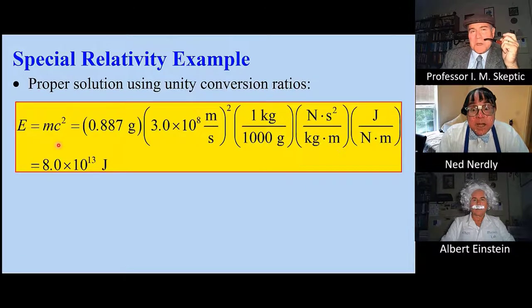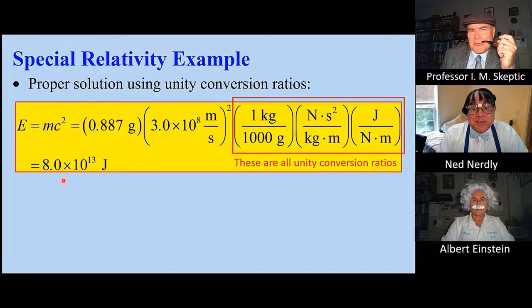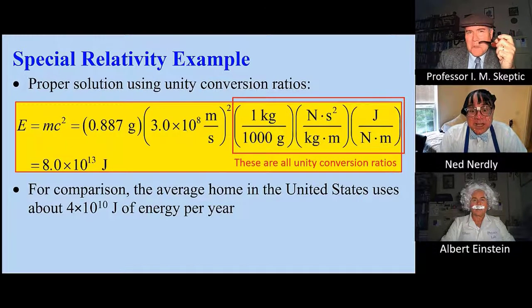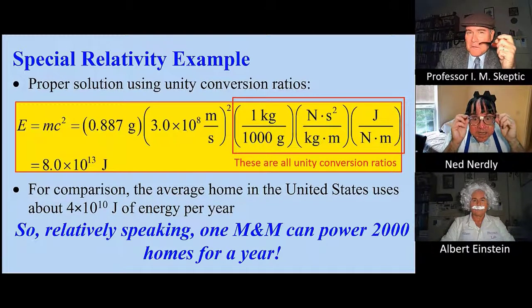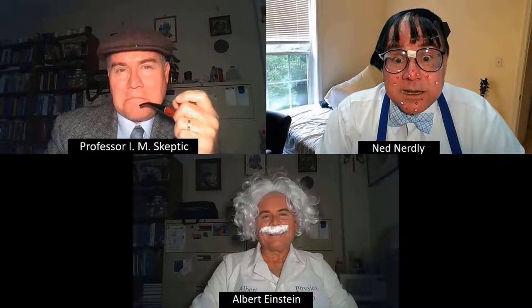We use Albert's famous equation, E equals M times C squared, and we string together these three unity conversion ratios. We get about 8 times 10 to the 13th joules. For comparison, the average US home uses about 4 times 10 to the 10th joules in a year. So relatively speaking, one M&M can power 2,000 homes for a year. I like this example.